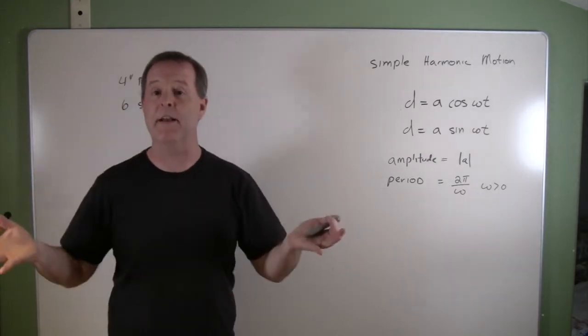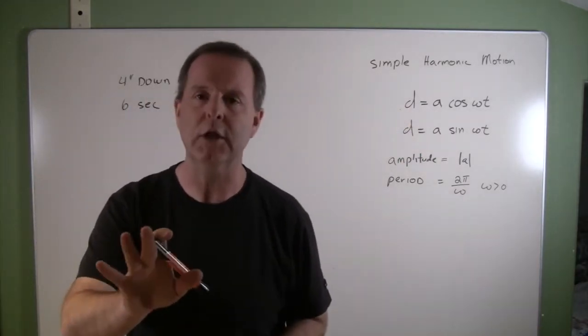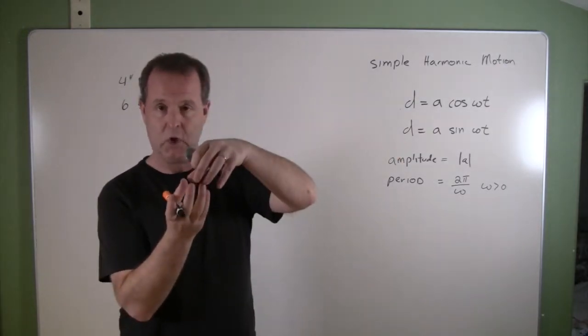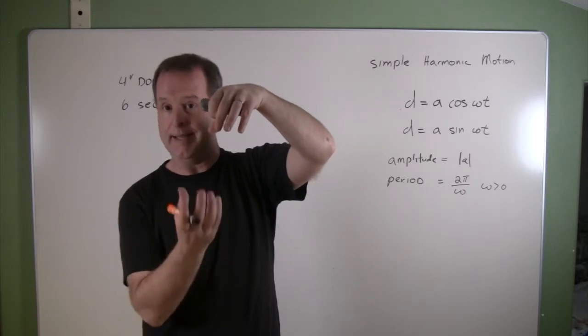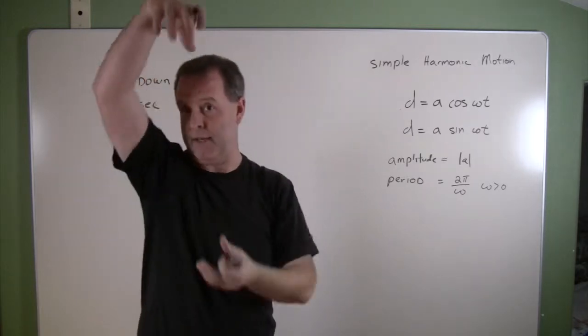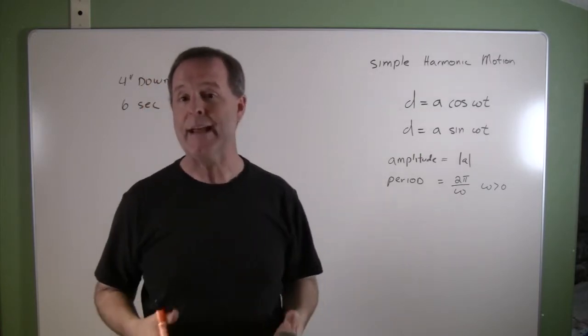So the first thing I need to have an idea of is which of these two is the best one to use. And here's that clue: if your object that you're starting with is not at its center resting spot, like he's pulled down four inches or he's lifted up some time frame, use the cosine function. However, if your model